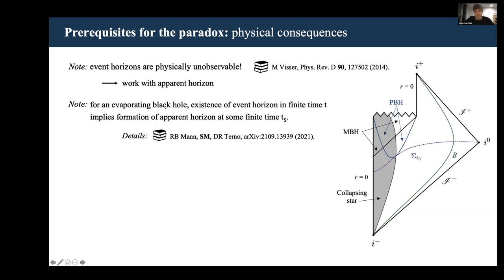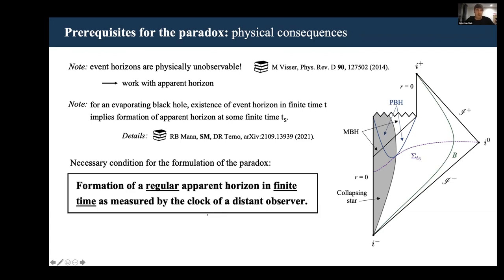With that in mind, you can actually rephrase the physical consequences as the formation of a regular apparent horizon in finite time as measured by the clock of a distant observer. There are two physical conditions encoded here: regularity and finite time formation.